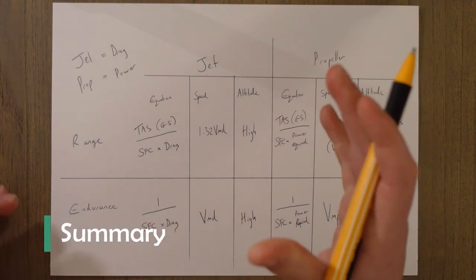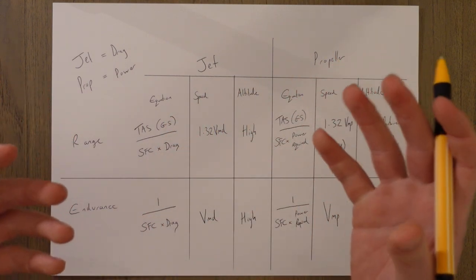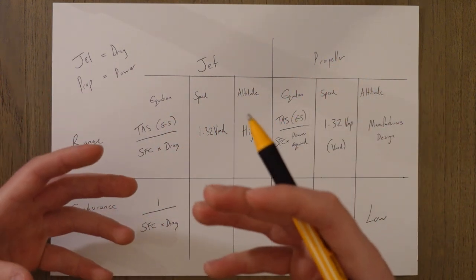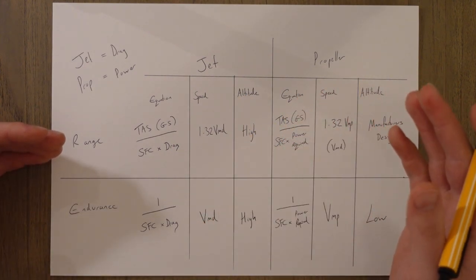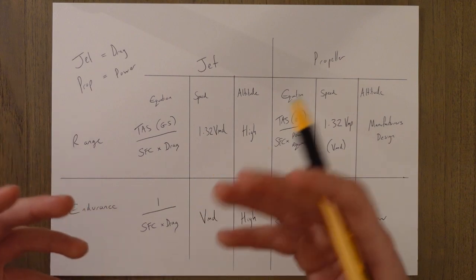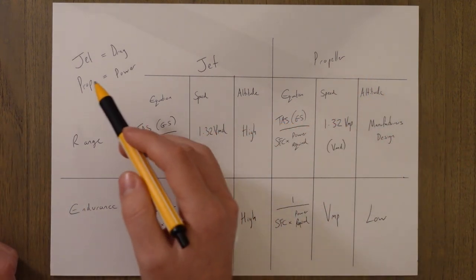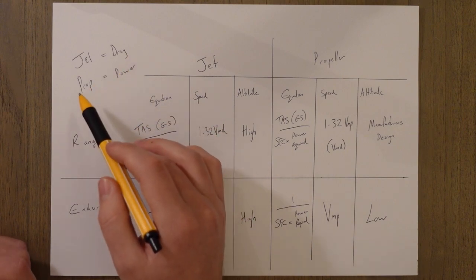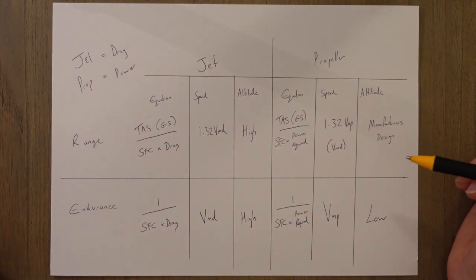In summary then I think of range and endurance as being both measures of efficiency, they're very closely linked and there can be possibility to confuse them both. Just think of range as distance, endurance as time and then you should hopefully be able to work it out. Another thing I like to think of is jet equals drag, prop equals power. Vmp prop is all to do with power required.